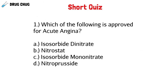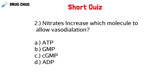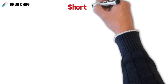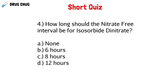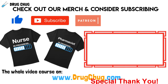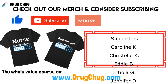Now let's jump into a short quiz. Question 1: Which of the following is approved for acute angina? Question 2: Nitrates increase which molecule to allow vasodilation? Question 3: Nitrates are contraindicated with which of the following? Question 4: How long should the nitrate-free interval be for isosorbide dinitrate? Thanks for watching — I hope you learned something, and a special shout-out to my supporters.